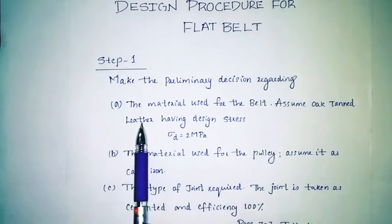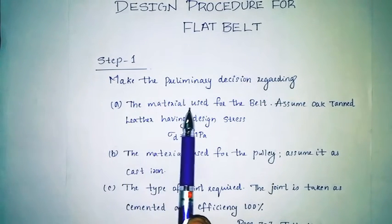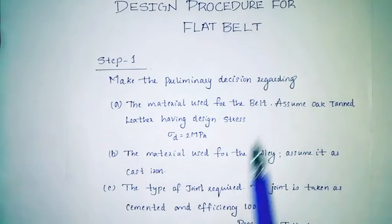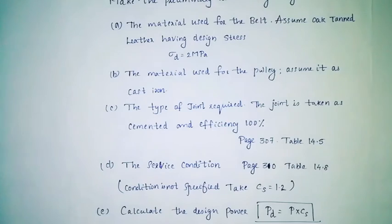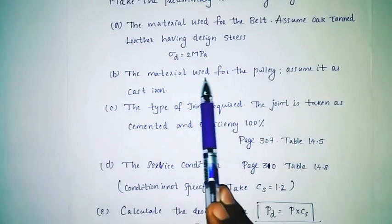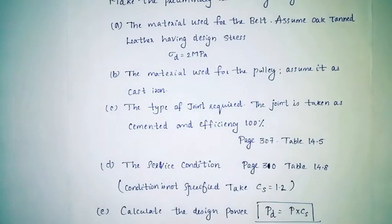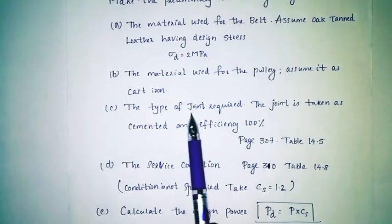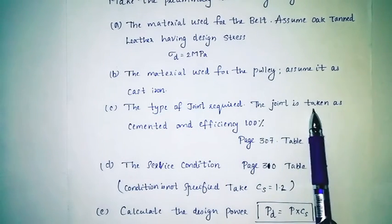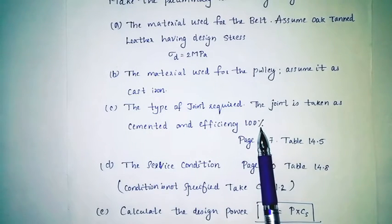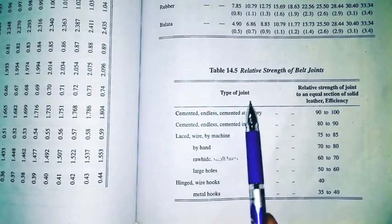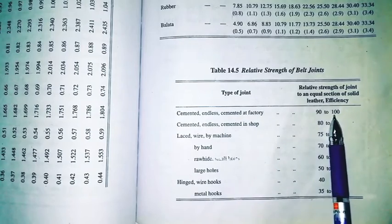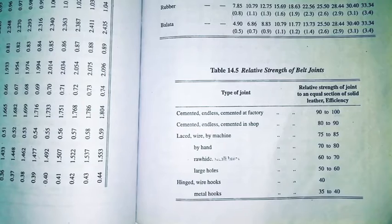We are going to discuss the material used for the belt and assume the material used for the pulley. The joint is taken as cemented, with efficiency 100%. That is page 307, Table 14.5 — relative strength of belt joint: cemented and endless is 100%. We have to assume the value of 100.